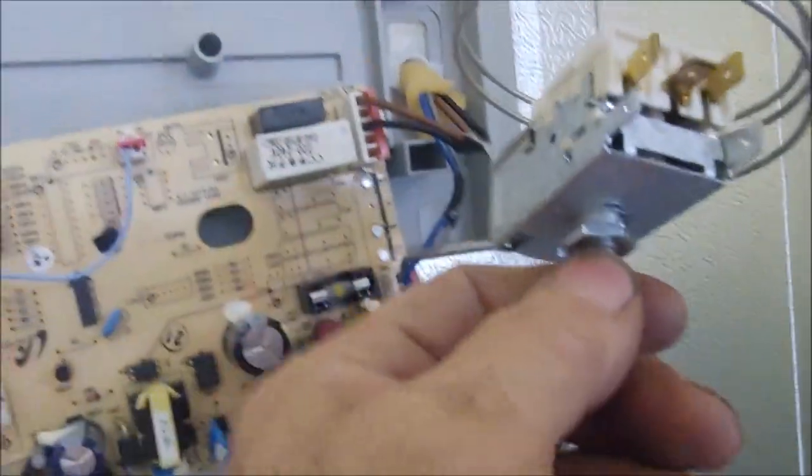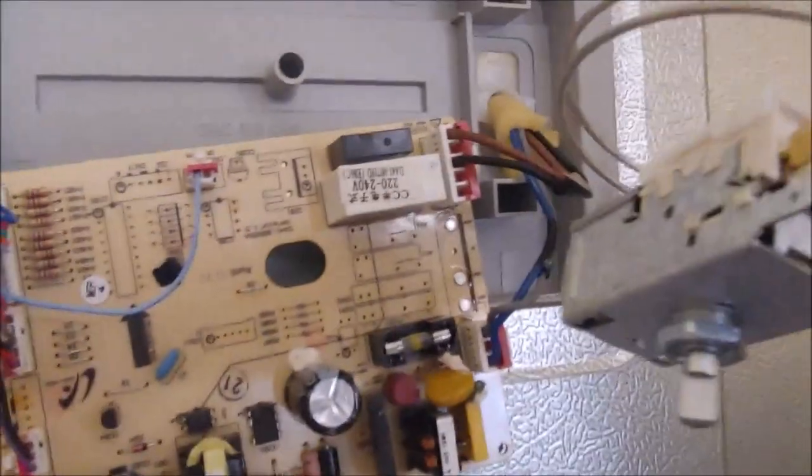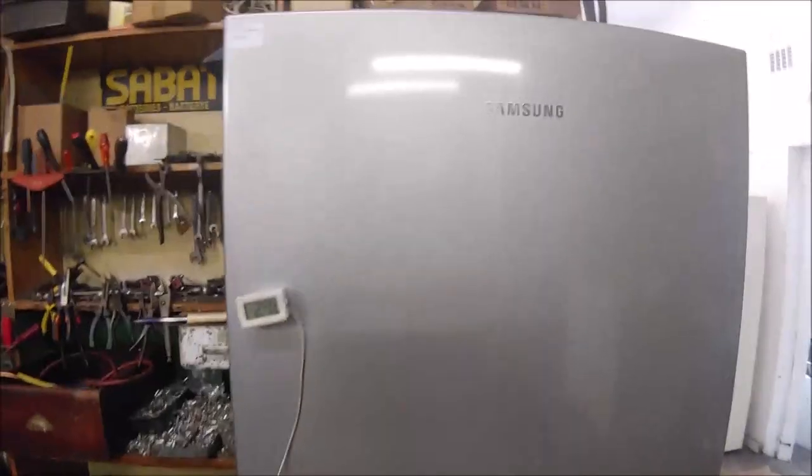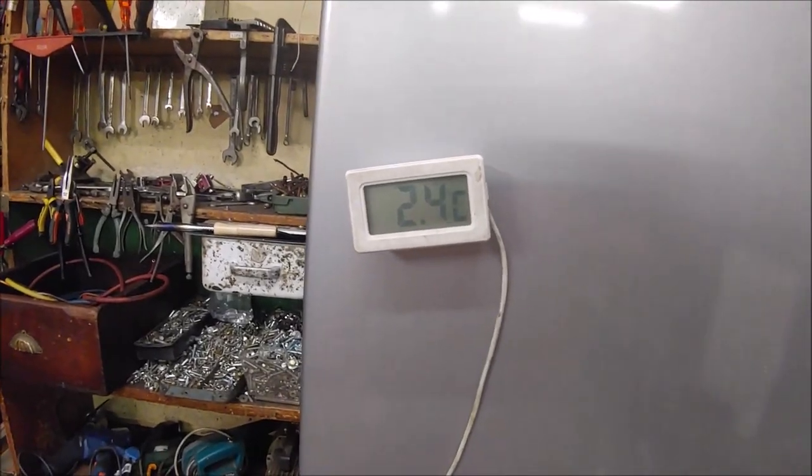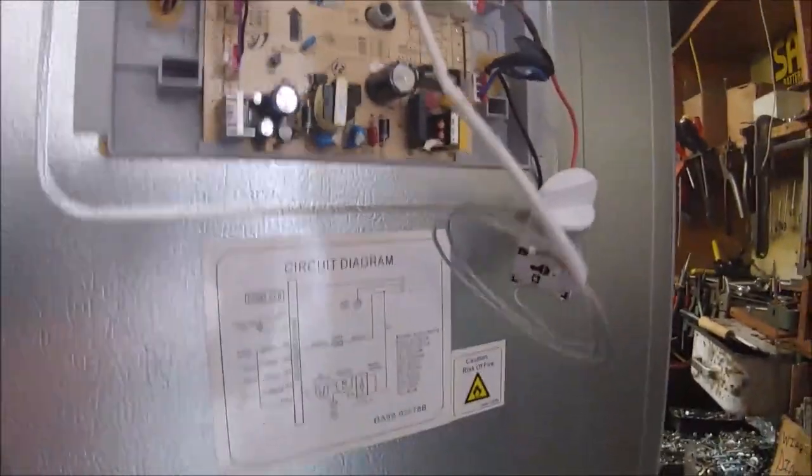Then we just control this, get this in the right setting and it should cycle like normal. The Samsung fridge is now on 2.4 degrees inside the fridge. It's running with the two wires connected to the thermostat.